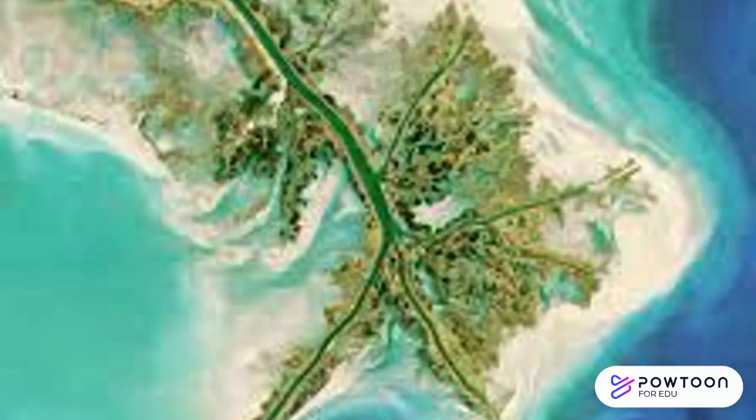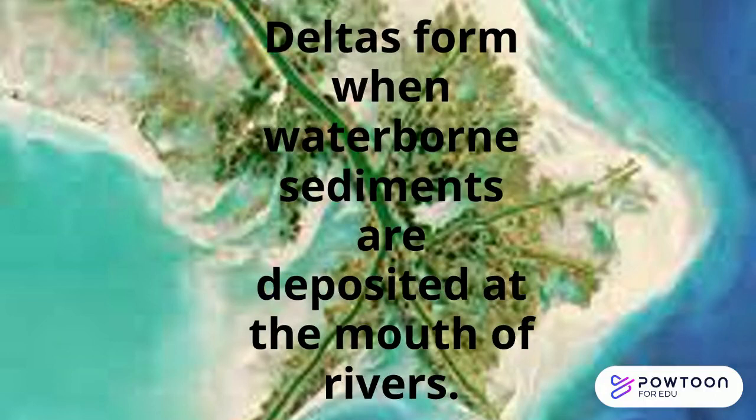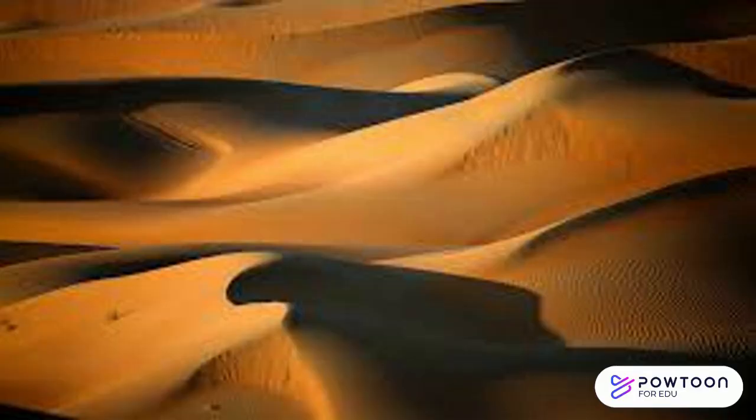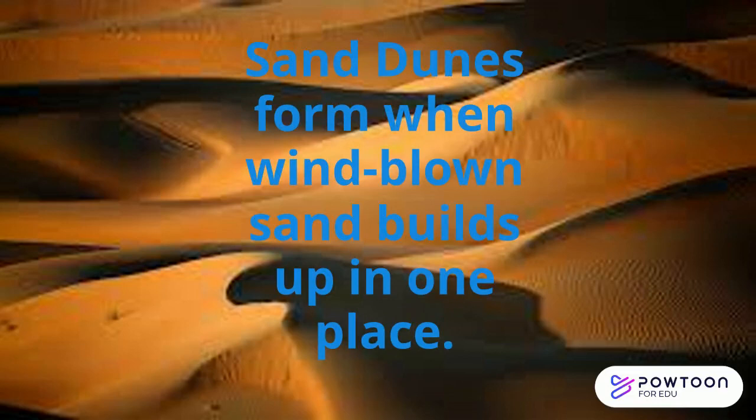Deltas form when waterborne sediments are deposited at the mouth of rivers — this is where the river and the ocean meet. Sand dunes form when wind-blown sand builds up in one place, meaning the sand moves from one place and builds up in another.